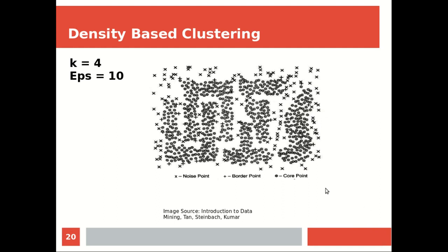With k equals 4 and EPS equals 10, you can see the core points represented by circles and border points represented by plus signs. Border points can belong to either of two nearby clusters — you assign them based on the closest cluster. Where there is no tiebreaker, use the nearest assignment. Crosses represent noise points.